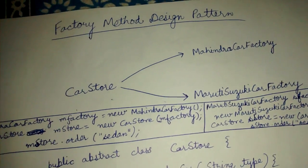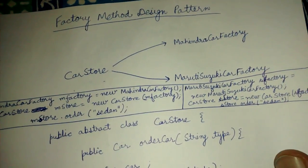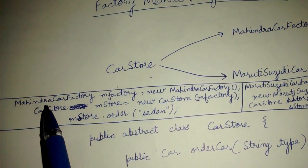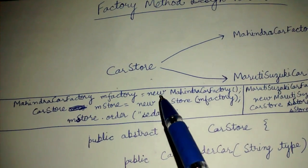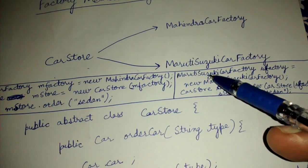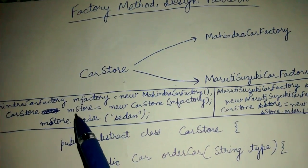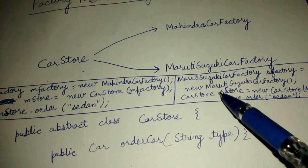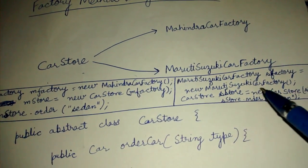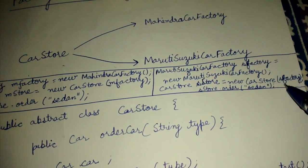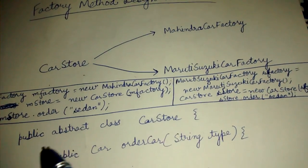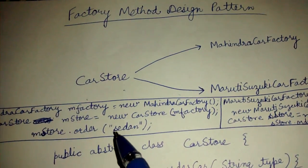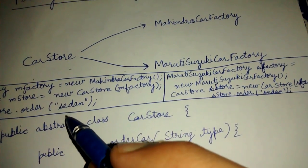In this case, what our simple factory implementation says is: we create a simple Mahindra car factory, and then for the Maruti Suzuki car factory, we create a car store and pass the just-created factory in the constructor. Similarly, for the Maruti Suzuki car store, we pass it the just-created Maruti Suzuki factory. Then we call the order method on the car store and pass whatever type of car we want to order.